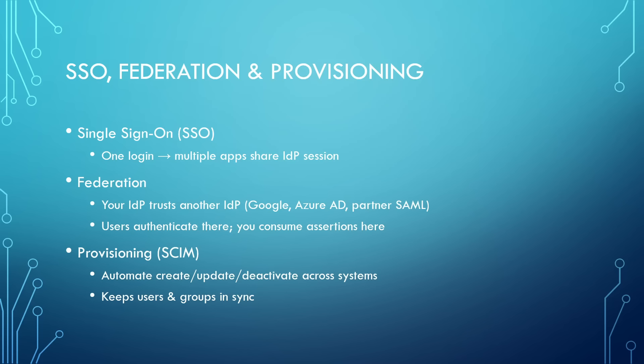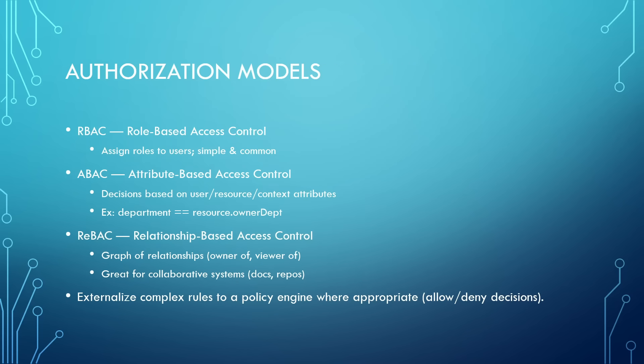There are three big authorization models to know. RBAC — Role-Based Access Control — assigns roles to users; simple and common. ABAC — Attribute-Based Access Control — makes decisions using user, resource, and context attributes like department or resource owner. ReBAC — Relationship-Based Access Control — thinks in graphs: owner-of, viewer-of — perfect for collaborative systems like docs or repos. For complex rules, externalize decisions to a policy engine so a service can ask allow or deny with context.